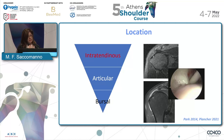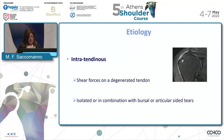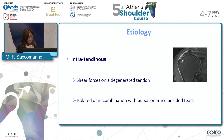Intratendinous tears look like the most common, followed by articular-sided lesions, which are basically two to three times more common than bursal-sided lesions. The ones we know least about are the intratendinous ones, because much of our information comes from cadaveric studies rather than clinical data. They probably come from shear forces on a degenerated tendon, and can appear isolated or in combination with bursal or articular-sided tears in a different part of the rotator cuff.